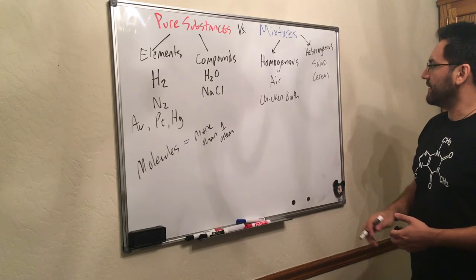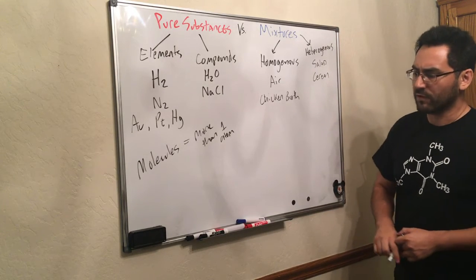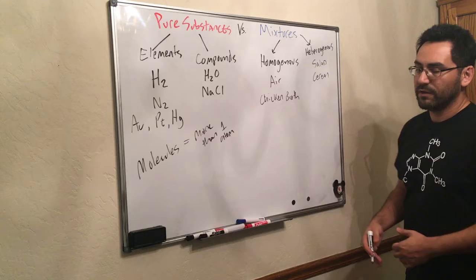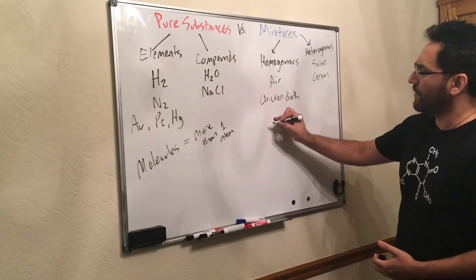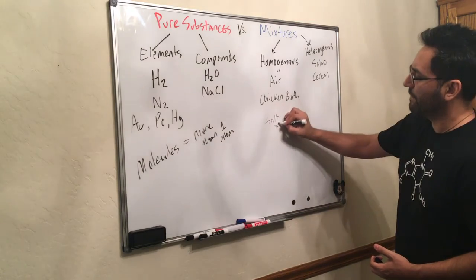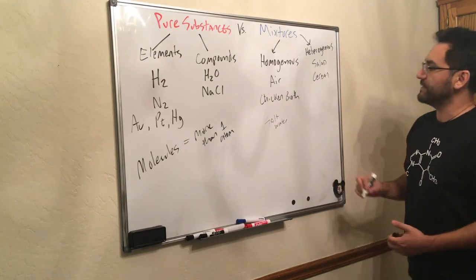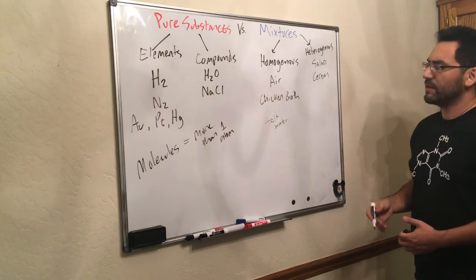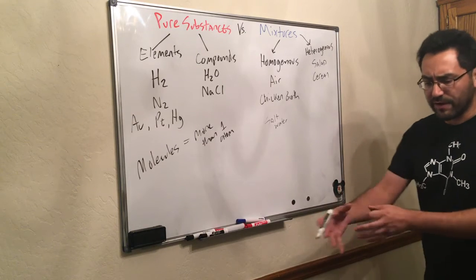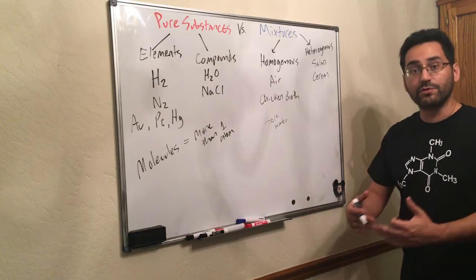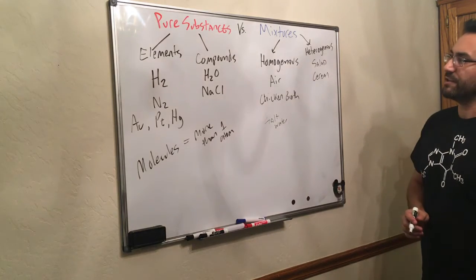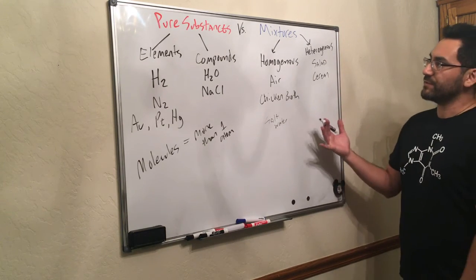You could also add, let's say salt water would be down here. Heterogeneous, maybe just the dirt outside. You know, you're going to find all kinds of different clumps of dirt, different colors of dirt, but it's not necessarily uniform. So that would be heterogeneous.